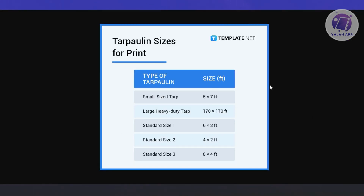These are the common tarpaulin sizes. According to the website, for a small tarp size you have 5 by 7 feet. You need to choose the correct size because of resolution — the wrong size will make your tarpaulin really blurry. For a large heavy-duty tarp, it's around 170 by 170 feet in a square format. The standard sizes are: standard size 1 is 6 by 3, standard size 2 is 4 by 2, and standard size 3 is 8 by 4 feet — the largest one you can choose.